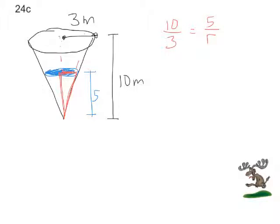And because of that we can say that we can have a ratio of 10 to 3 is equal to 5 to the water's radius, which I'll call as R. So if we solve for R, we're going to get 10R equals 15, R equals 1.5. And that kind of makes sense. If we've gone up half the distance of the cone, we're going to have half the radius. Because of the nature of the cone.